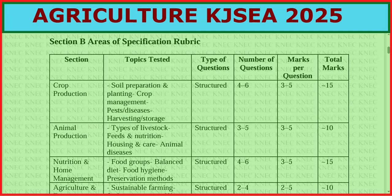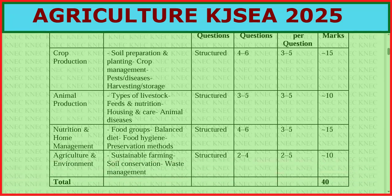Then we go to agriculture and environment: sustainable farming, soil conservation, and waste management. These are structured questions, two to four questions, each two to five marks, giving us 10 marks. Therefore the total is 40 marks.